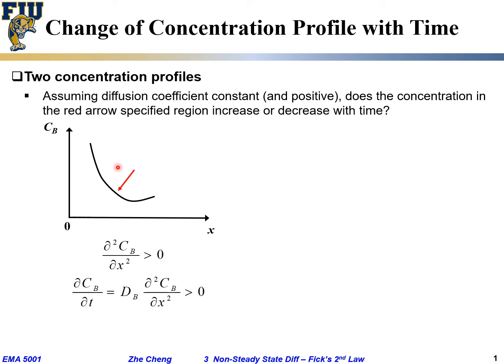So based on what we got from Fick's second law, if the D is constant and also positive, and the curvature is also positive...